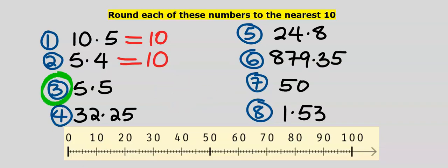Consider 5.5, which is between 0 and 10. Halfway between them is 5. 5.5 is greater than 5 and is closer to 10 than to 0. Our answer is 10.